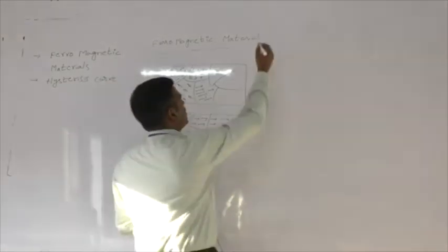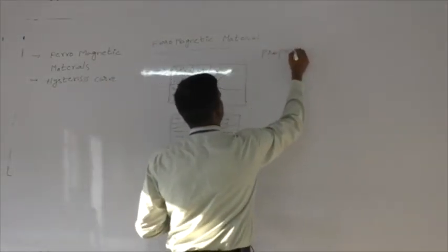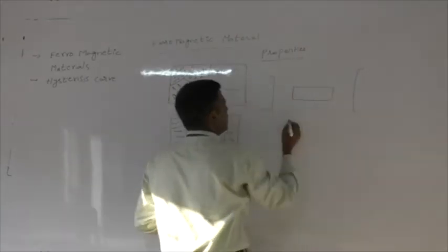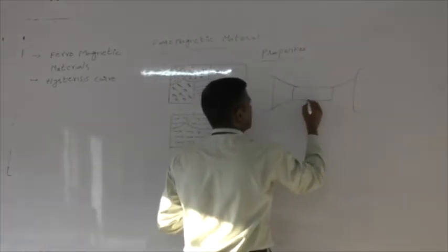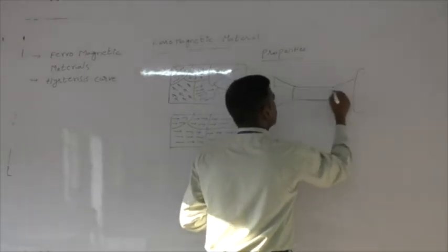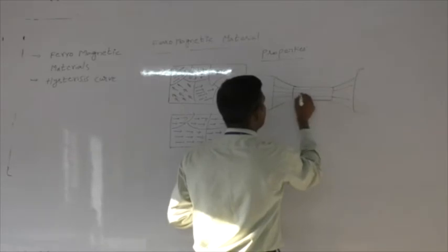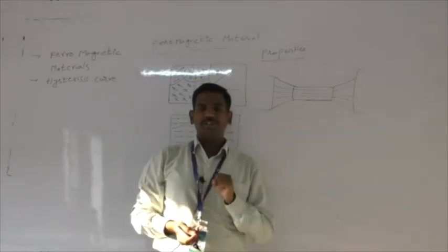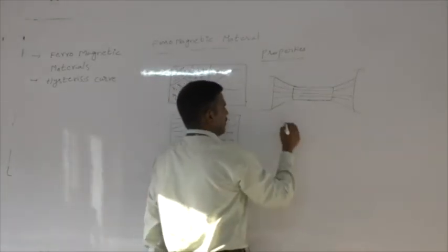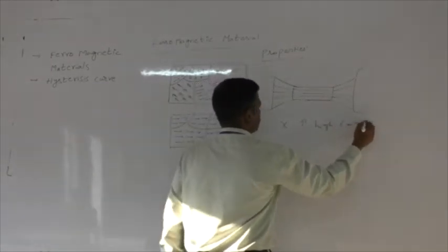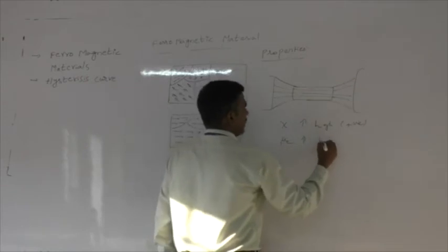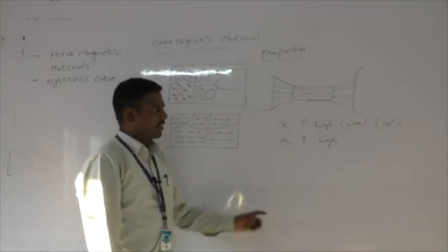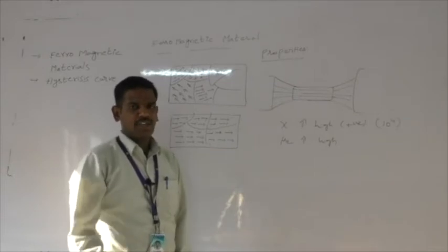The properties of ferromagnetic materials: when placed inside a uniform magnetic field, almost all the field lines are attracted into the specimen with hardly any magnetic lines of force lying outside. The susceptibility is high and positive, in the order of around 10 to the power 4, and the relative permeability is also very high.